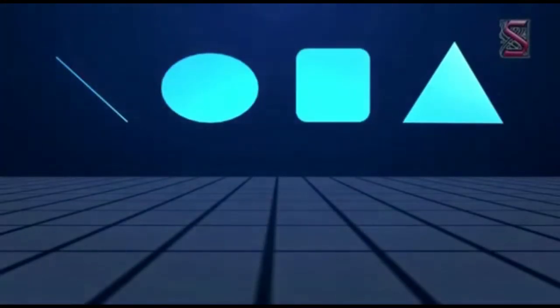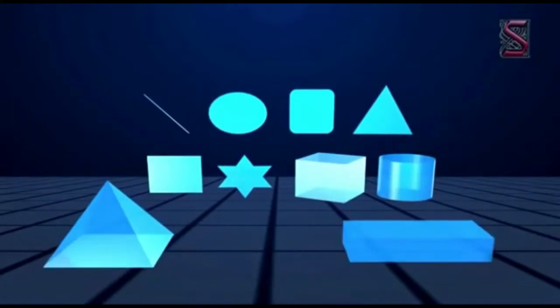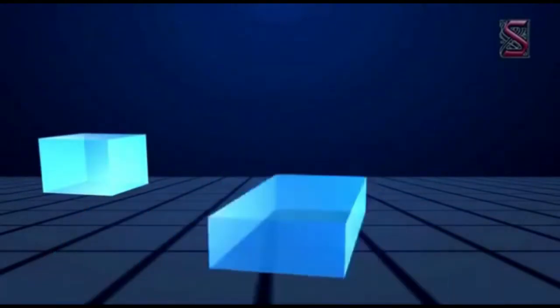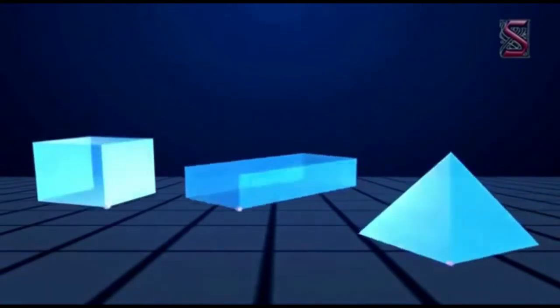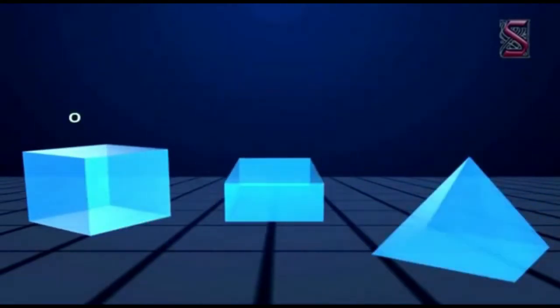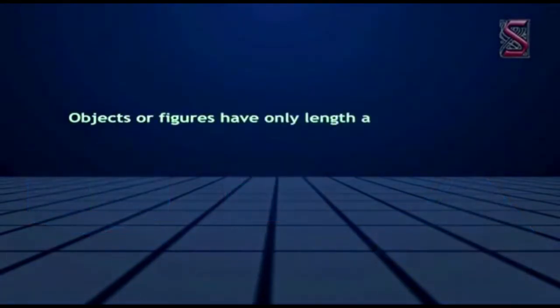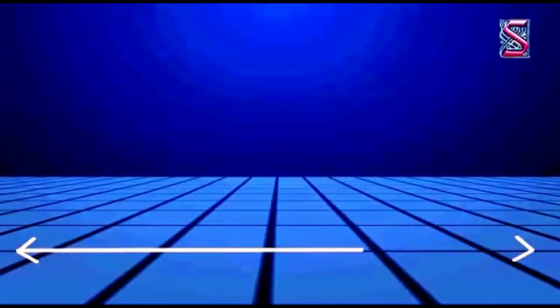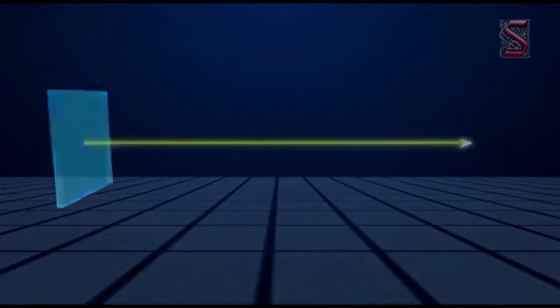In our day-to-day life we come across several objects which have different shapes and sizes. One thing common about most of these objects is that they all have some length, breadth, and height. Objects or figures having only length are known as one-dimensional objects. For example, a line is a one-dimensional figure. A ray is a one-dimensional figure.